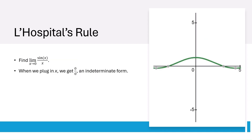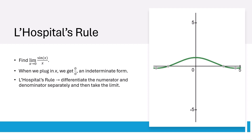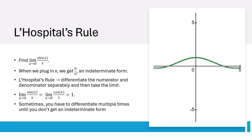Say we want to take the limit as x approaches 0 of sin x over x. When we plug in x, we get 0 over 0, which is an indeterminate form. Luckily, we have L'Hôpital's rule, which says that when we get an indeterminate form, we can differentiate the numerator and denominator separately and then take the limit again. In this case, we find that the limit as x approaches 0 of sin x over x equals 1. Sometimes you'll differentiate and get an indeterminate form again — if that happens, you just keep applying L'Hôpital's rule until you get a finite number or an infinite number.